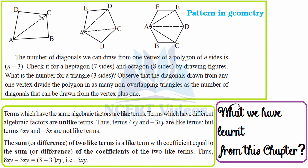From vertex A of a quadrilateral, we can draw a diagonal to C but not to D, since a diagonal connects opposite vertices. For a pentagon with 5 sides: 5 − 3 = 2 diagonals can be drawn from any one vertex — for example from E to B and E to C. For a heptagon with 7 sides: 7 − 3 = 4 diagonals. For an octagon with 8 sides: 8 − 3 = 5 diagonals.